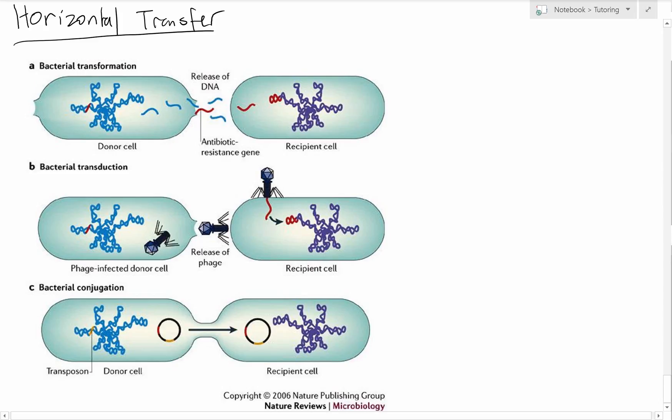Transformation occurs when the donor bacterium, this donor cell here—and this can be a plasmid or just bits of the chromosome—when the donor bacterium lyses, competent cells of the same species, so that's important, this recipient cell is of the same species, they can uptake that DNA and incorporate it into their own genome. So it allows the spread of genes between serotypes.